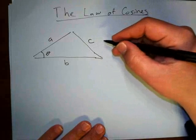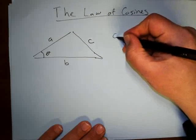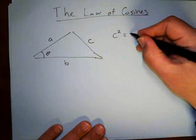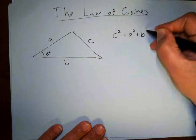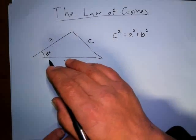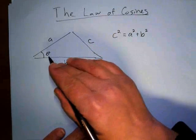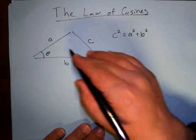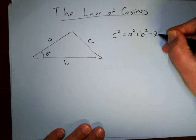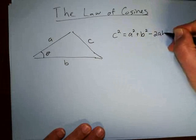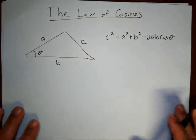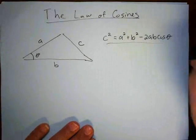Here's the relationship. C squared is equal to A squared plus B squared — that kind of looks like the Pythagorean theorem, except this is not a right triangle. So C squared, the side opposite the angle, is equal to A squared plus B squared minus two times AB times the cosine of theta. This is what the law of cosines says.